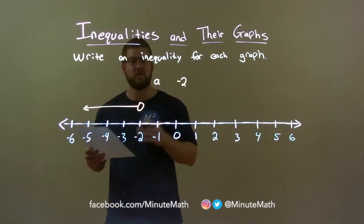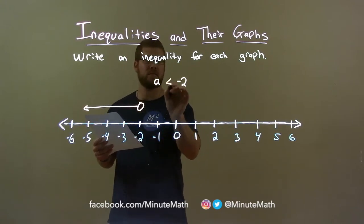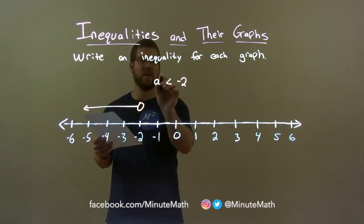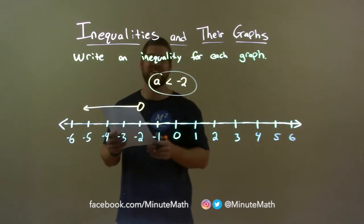And the arrow is going to the left, so a is less than negative 2, so less than sign, and there we have it, a is less than negative 2.